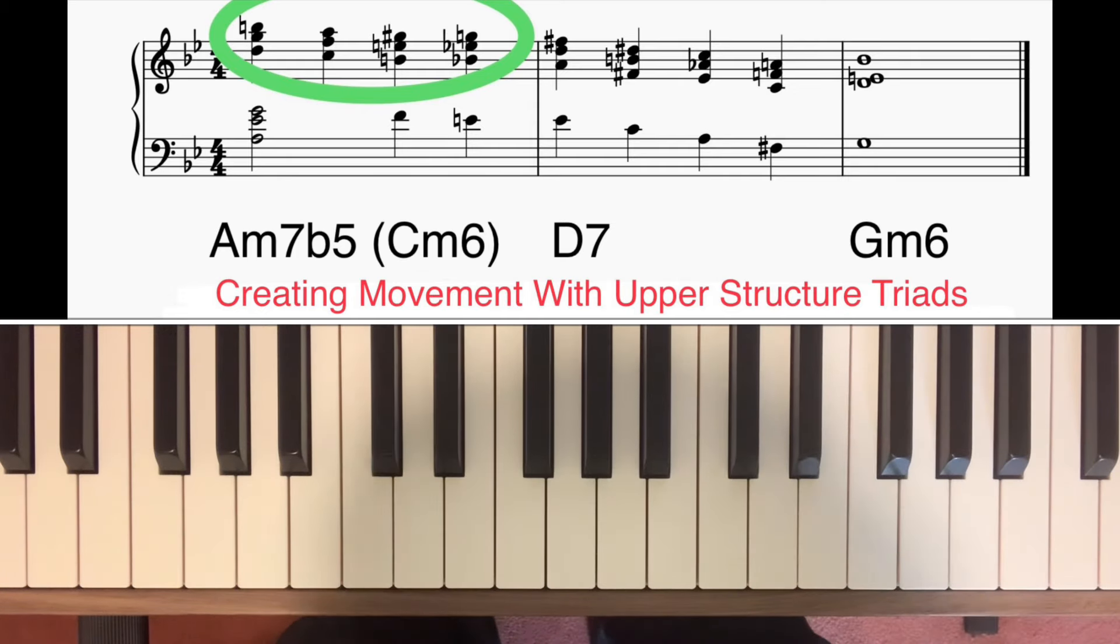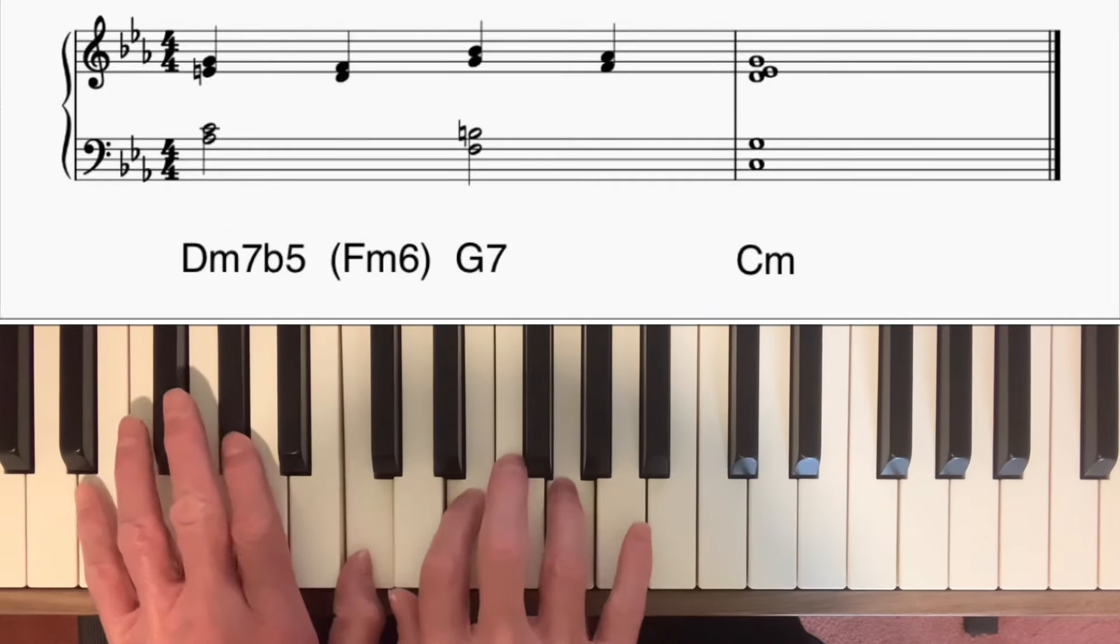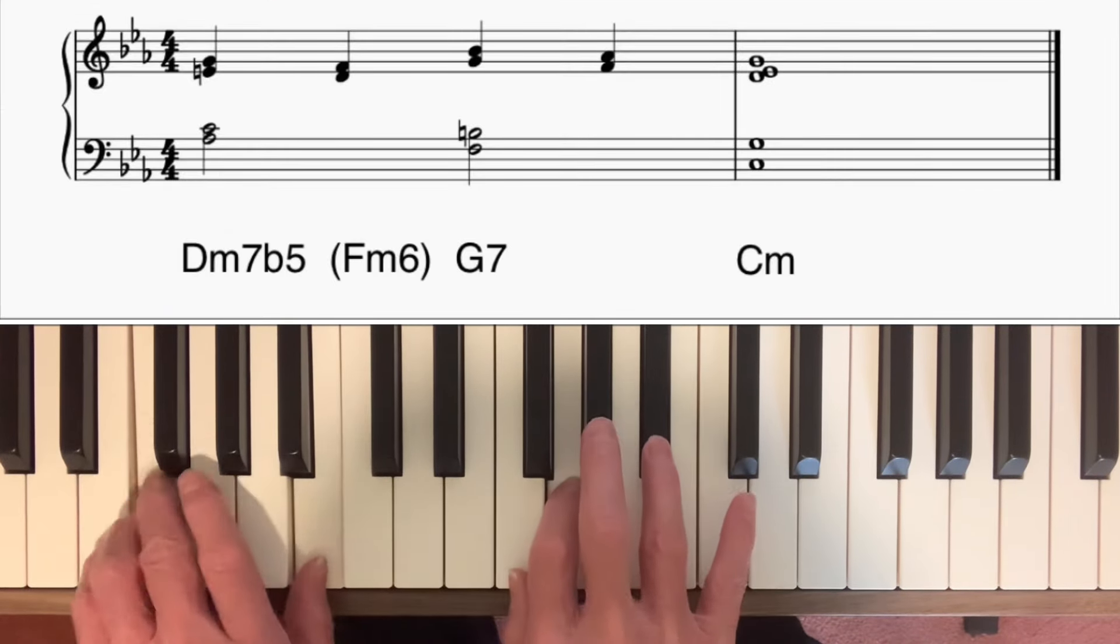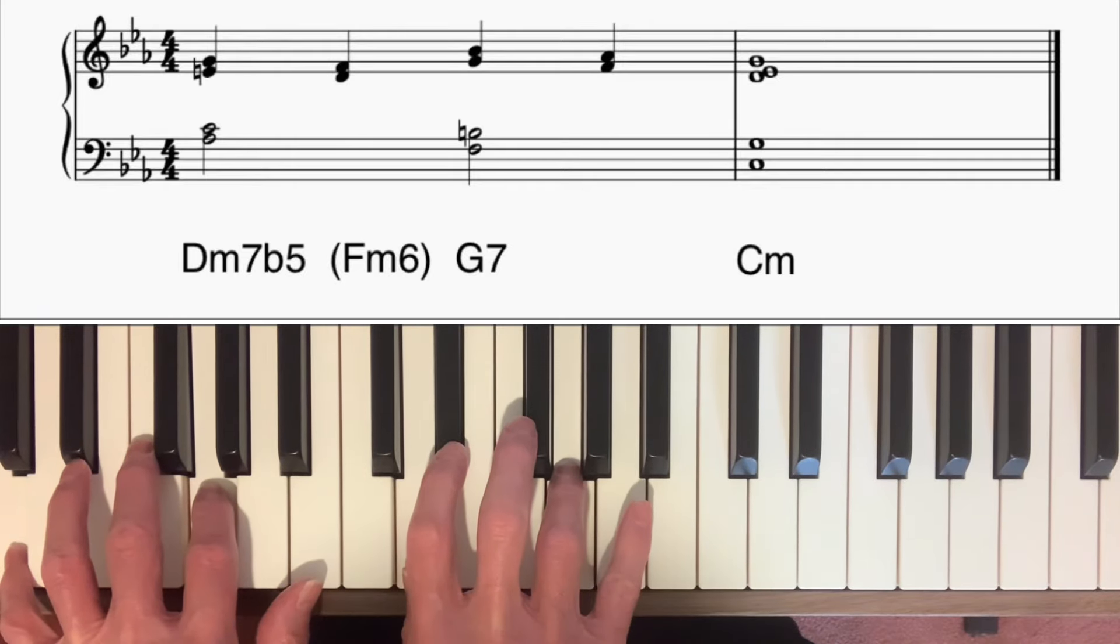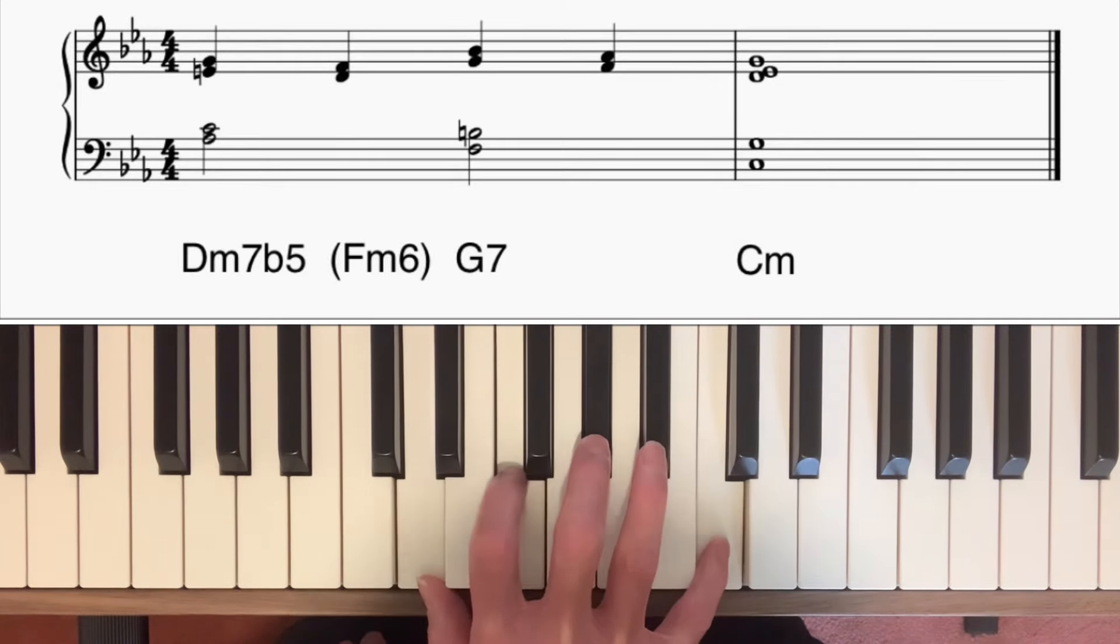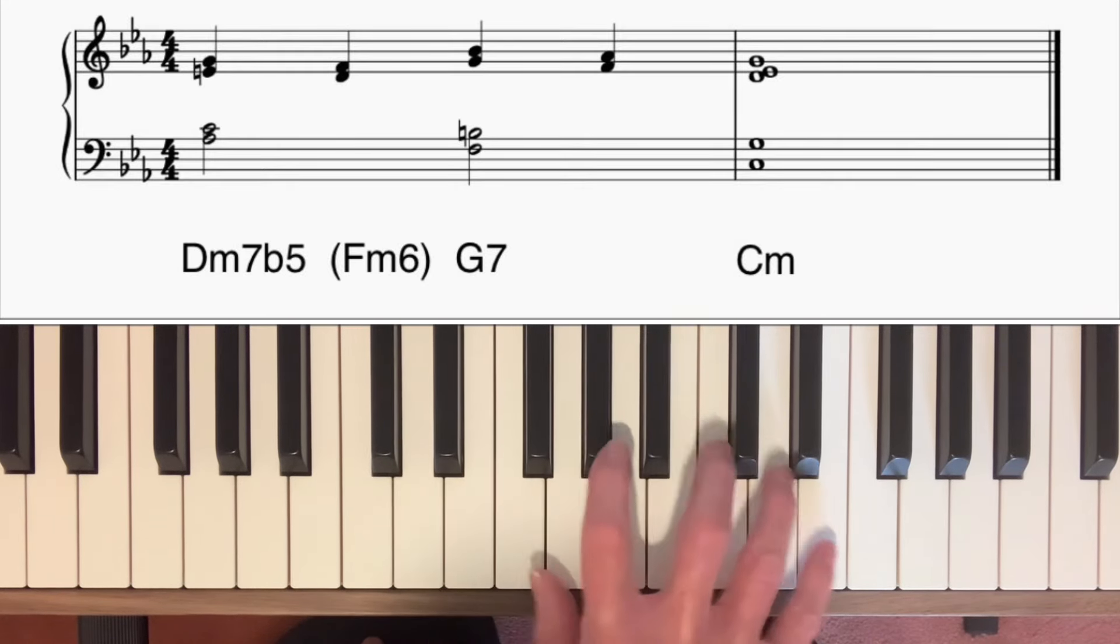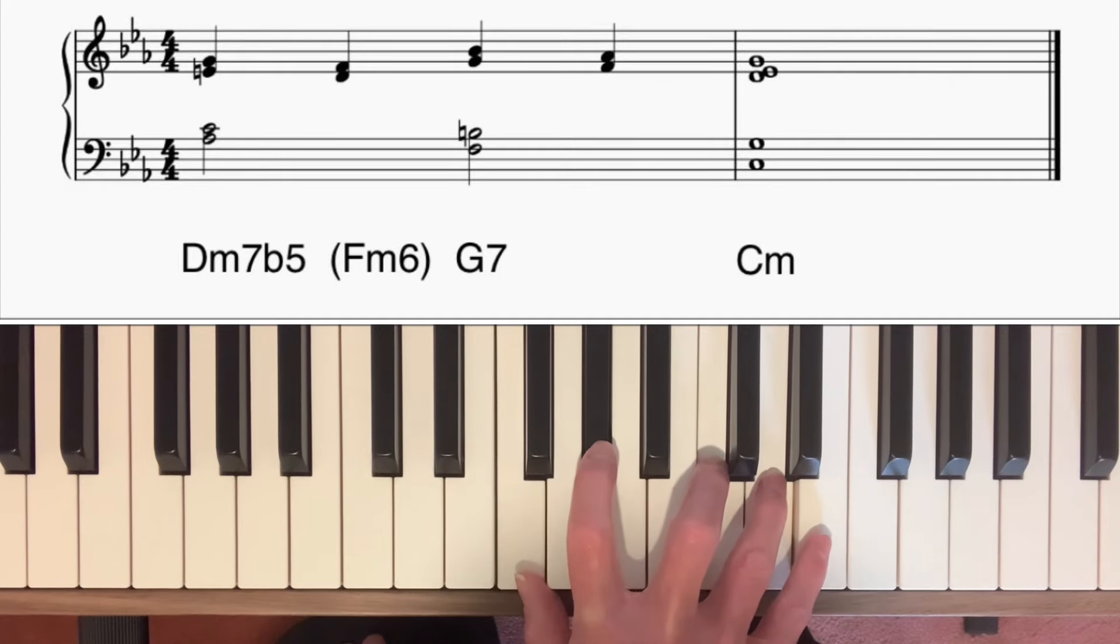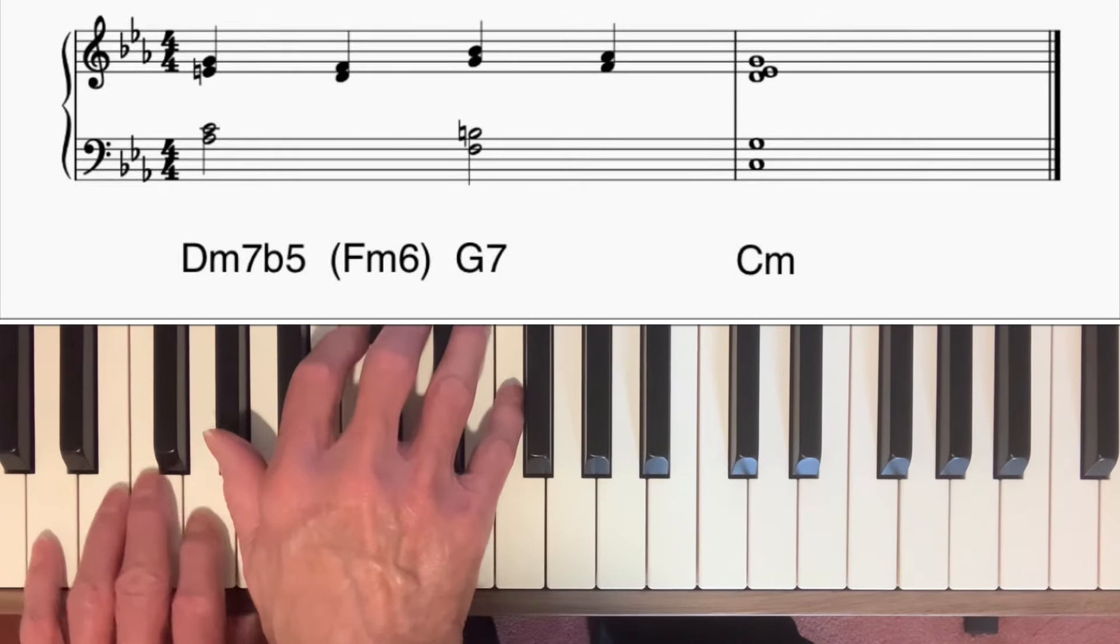Let's look at another example now of how you can create movement over a minor 7 flat 5 chord. What I've just played was a 2-5-1 chord progression in the key of C minor. Chord 2 is D minor 7 flat 5. Now Barry Harris would have said that D minor 7 flat 5 is the same chord as F minor 6. It contains the same notes. And he would have said that therefore you can use the F minor 6 diminished 7th scale.